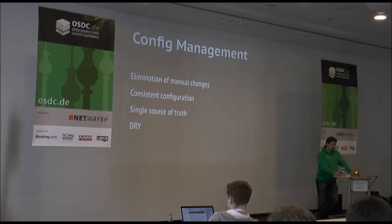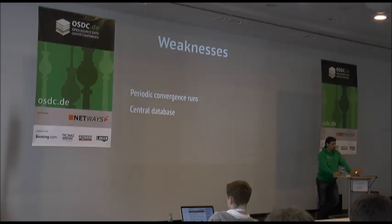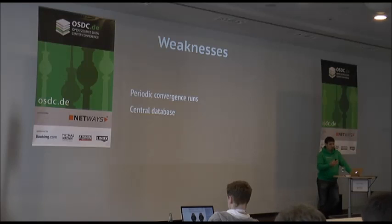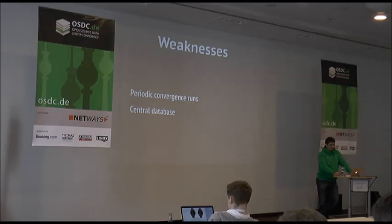But configuration management also has its weaknesses. Mostly it works with periodic convergence runs. You have, for example, a Chef client that runs every half hour, or in our case every 10 minutes. This introduces change lag — it can take up to 10 minutes or half an hour until changes are reflected on your servers. If you depend on information in the central database, this can take even longer, because first a node needs to do a convergence run, the results are stored in the database, and then after another half hour another node queries it and uses the updated data.